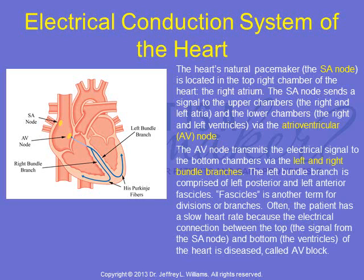The AV node transmits the electrical signal to the bottom chambers via the left and right bundle branches. The left bundle branch is comprised of left posterior and left anterior fascicles — fascicles being another term for divisions or branches. Often, a patient has a slow heart rate because the electrical connection between the top, the signal from the SA node, and the bottom, the ventricles, is diseased. This is called AV block.